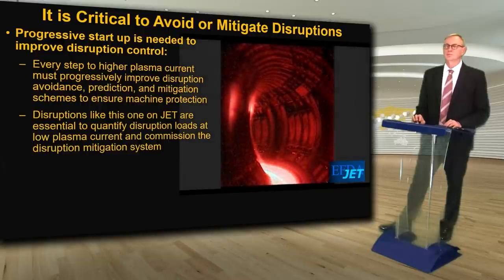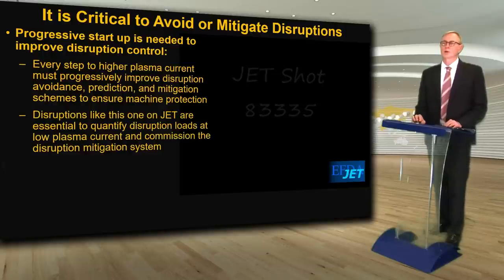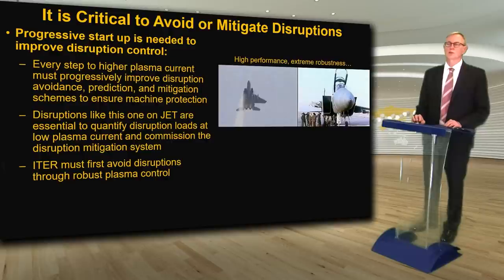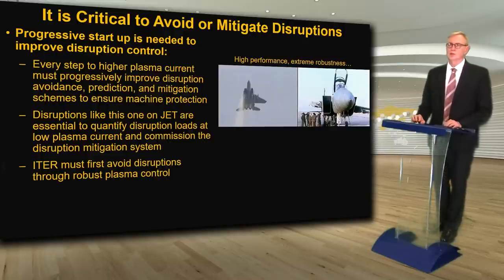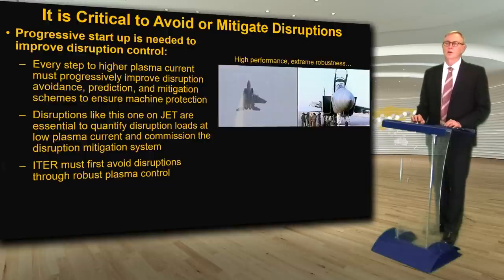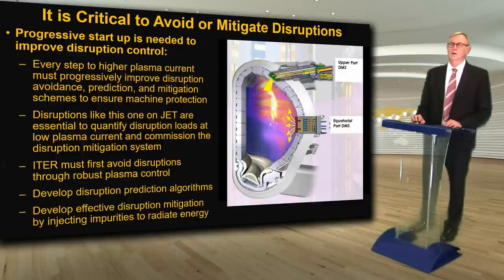Disruptions like this one on JET — where you can also hear the signal — are essential to the ITER research plan to quantify disruption loads at plasma current and commission the disruption mitigation system. ITER must first avoid disruptions through robust plasma control — like an Israeli F-15 aircraft that had an accident in midair and still managed to fly and land with only one wing, thanks to its sophisticated feedback control system. ITER must also develop disruption prediction algorithms and effective disruption mitigation by injecting impurities to radiate the plasma energy away.